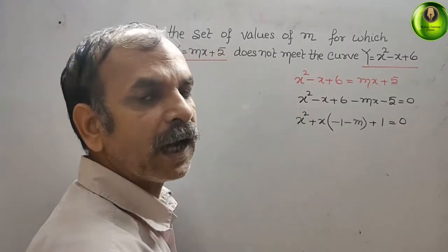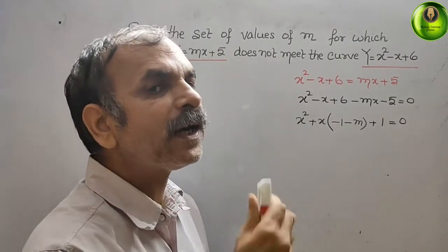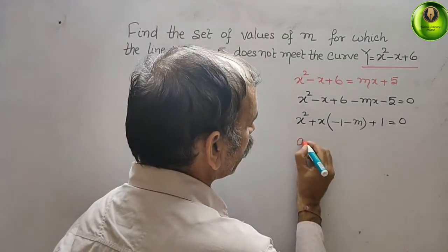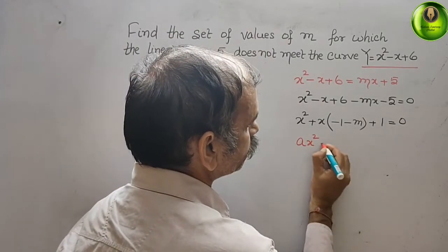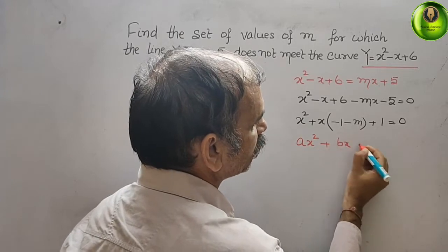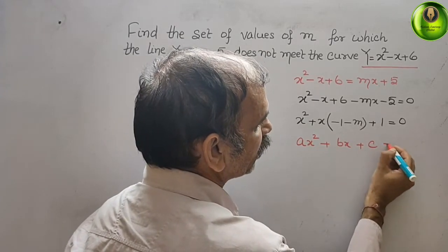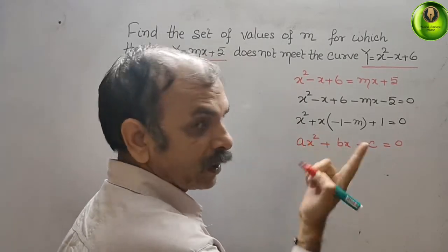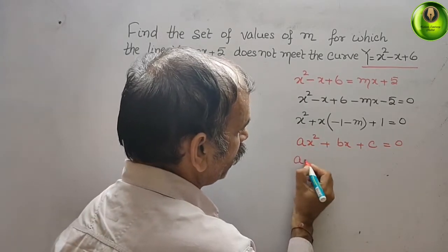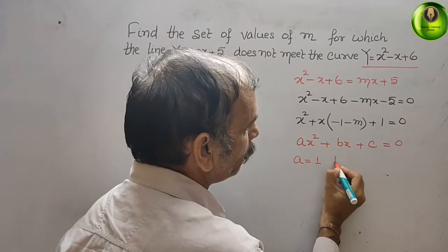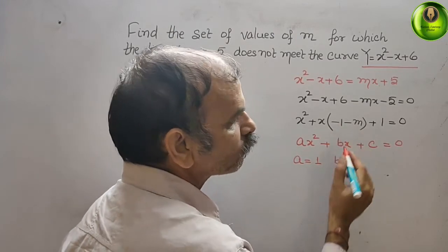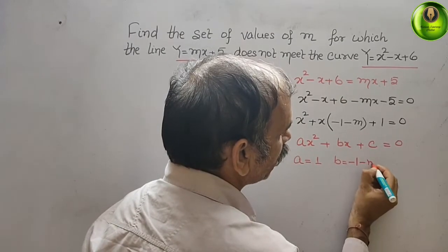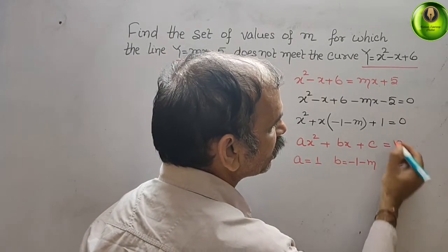Now we will write our standard quadratic formula: ax² + bx + c = 0. That means a = 1, b = (-1 - m), and c = 1.